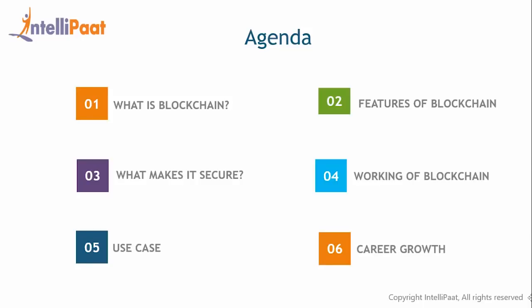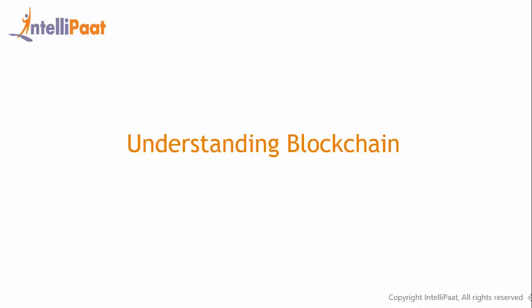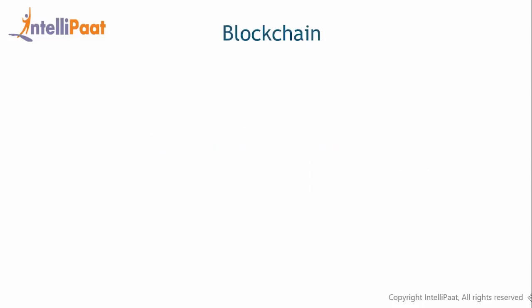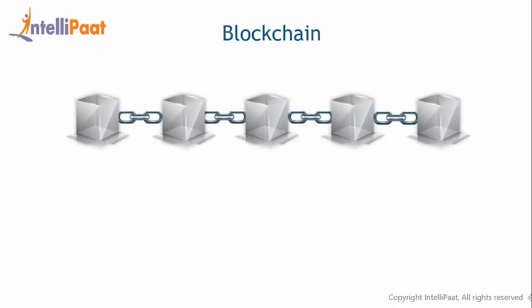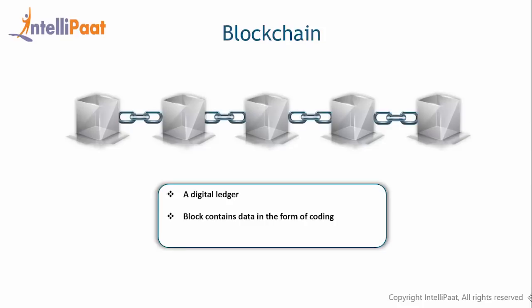So let's get started. What is blockchain? Blockchain, as the name suggests, is nothing but a linear chain of blocks. It's a digital ledger that holds information of transactions taking place over the web. Every block here contains data in the form of coding that is organized in chronological manner.